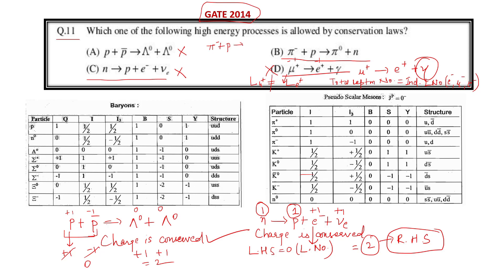Now for reaction B: pi minus plus proton going to pi zero plus neutron. Charge is conserved on both sides. Baryon number is also conserved on both sides because the baryon number for the proton is one and for the neutron is one.